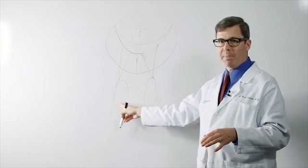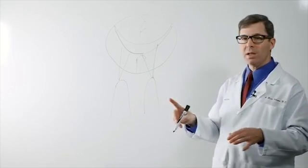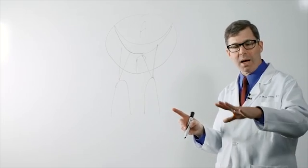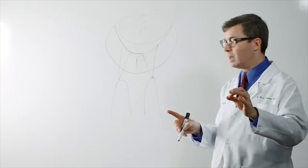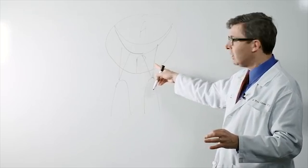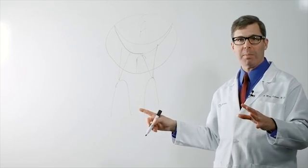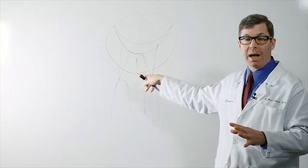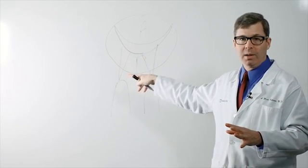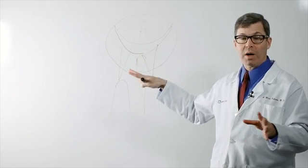These are called the papillary muscles. These two little muscles sit inside the heart and they send off cords, which look like strings, that attach to the valve. And much like the struts of a parachute, these cords hold the leaflets or flaps in their place. So the valve actually is fairly complicated.